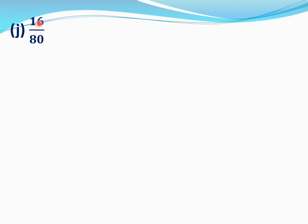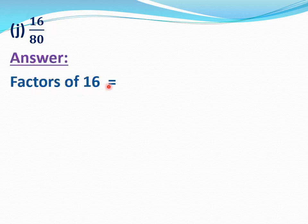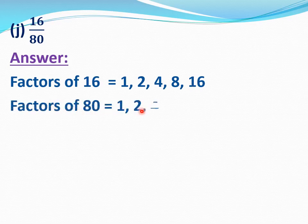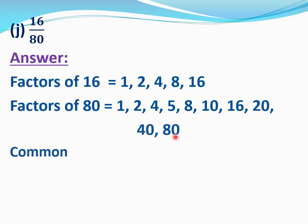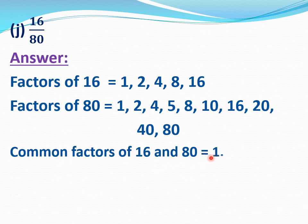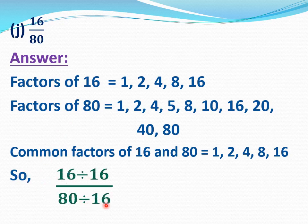Now J part, 16 by 80. We have to reduce 16 by 80 to its lowest form. Find the factors of 16 and 80. Factors of 16 equal 1, 2, 4, 8, and 16. Factors of 80 equal 1, 2, 4, 5, 8, 10, 16, 20, 40, and 80. Common factors of 16 and 80 equal 1, 2, 4, 8, and 16. 16 is the highest common factor. We will divide 16 by 80 by 16: 16 divide 16 and 80 divide 16 equal 1 by 5. 16 by 80 equal 1 by 5; 1 by 5 is the lowest form.